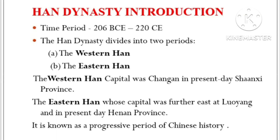Han Dynasty Introduction. The time period of Han Dynasty was 206 BCE to 220 CE. The Han Dynasty divides into two periods: the Western Han and the Eastern Han. The Western Han capital was Chang'an in present-day Shaanxi province, and the Eastern Han capital was further east at Luoyang in present-day Henan province. It is known as a progressive period of Chinese history, as they invented a lot of things in the Han Dynasty.